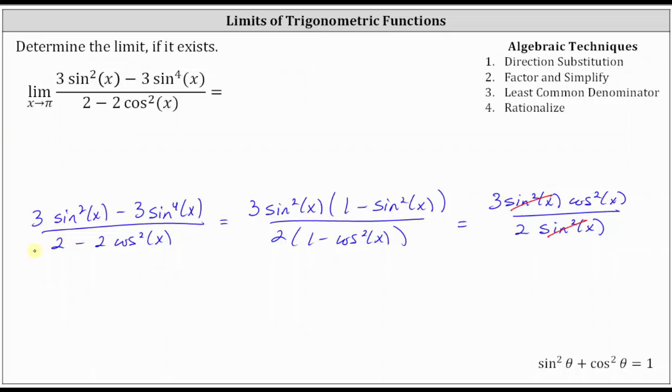So our final expression for the given function is three cosine squared x divided by two, which means the original limit is equal to the limit of three cosine squared x divided by two as x approaches pi. And the simplified function is continuous at and around pi, and therefore we can now determine the limit by performing direct substitution.